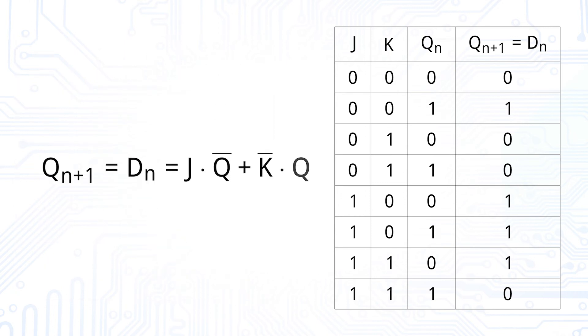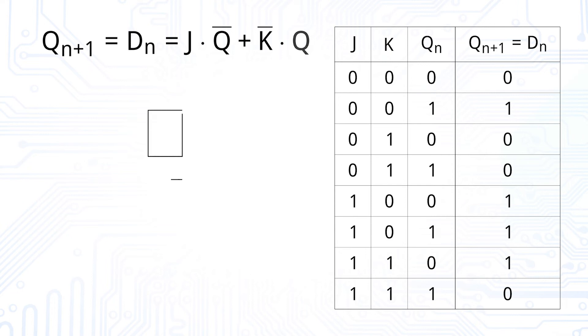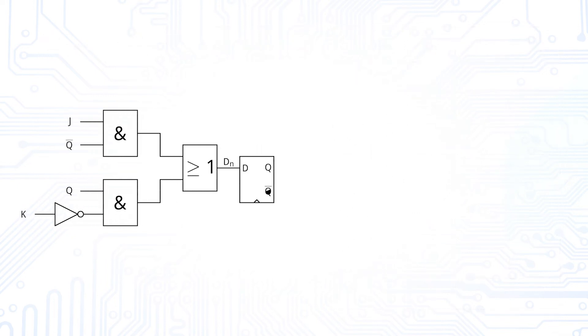Which is J and not Q or not K and Q. We can build this circuit by using two AND gates, one OR gate and one inverter. By that we have developed a J-K flip-flop.